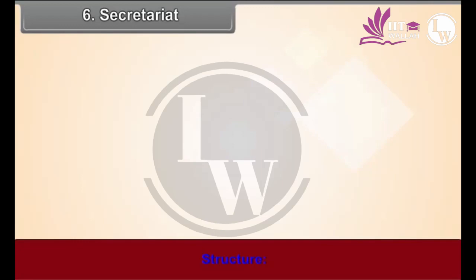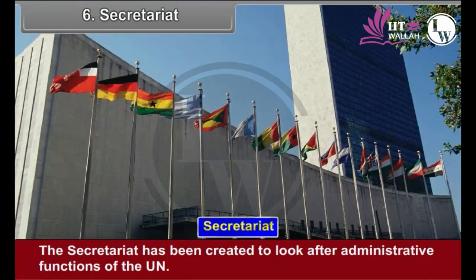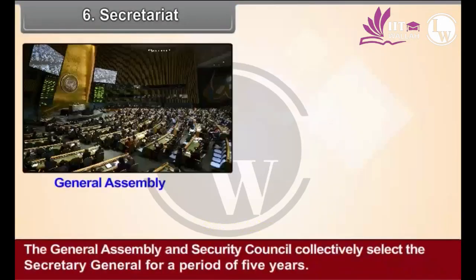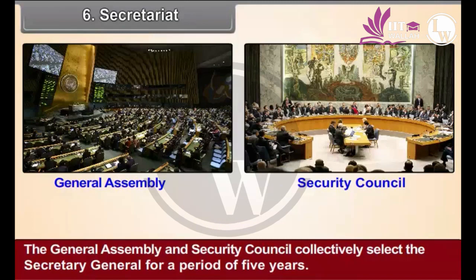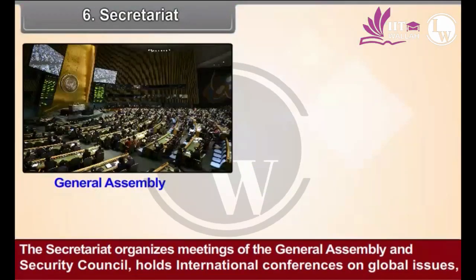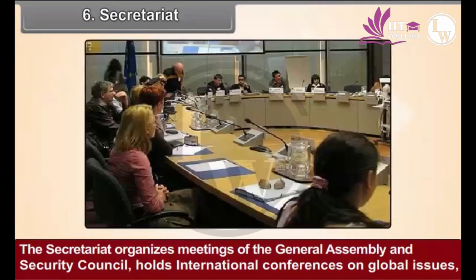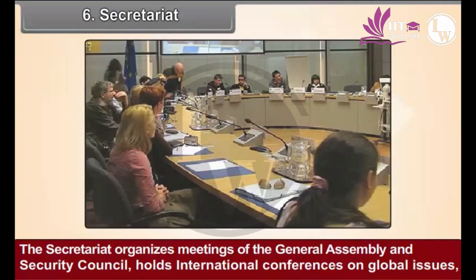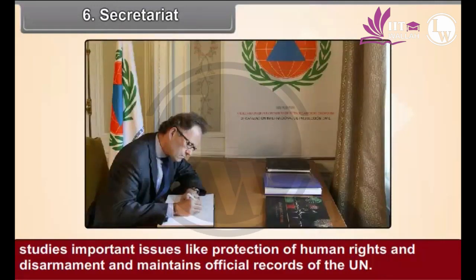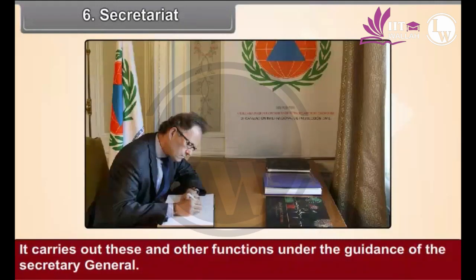The Secretariat has been created to look after the administrative functions of the UN. The Chief of the Secretariat is called the UN Secretary General. The General Assembly and Security Council collectively select the Secretary General for a period of 5 years. The Secretariat organizes meetings of the General Assembly and Security Council, holds international conferences on global issues, studies important issues like protection of human rights and disarmament, and maintains official records of the UN. It carries out these and other functions under the guidance of the Secretary General.